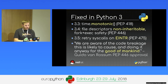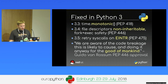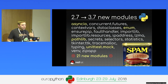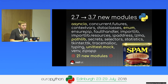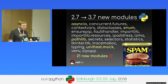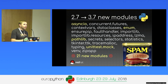Guido van Rossum, when he approved my change for file descriptor inheritance, wrote: 'We are aware of the code breakage this is likely to cause and are doing it anyway for the good of mankind.' And Python 3 is much better because of the many new modules in the standard library — I counted 21 new modules for Python 3.7, including AsyncIO for asynchronous programming, Enum, Pathlib for path manipulation, and unittest.mock for reducing test dependencies.